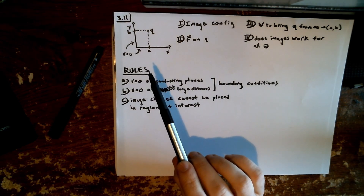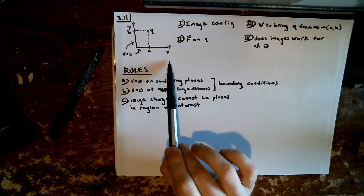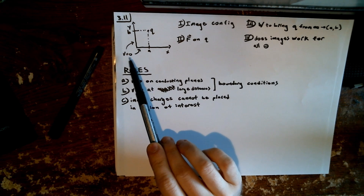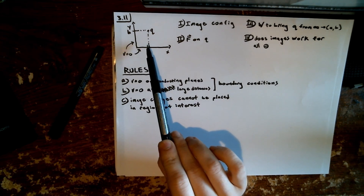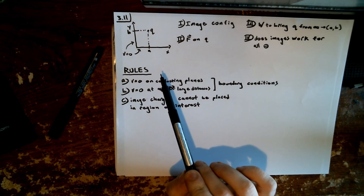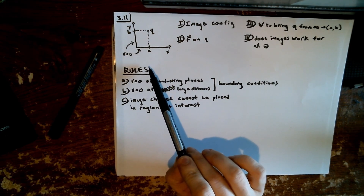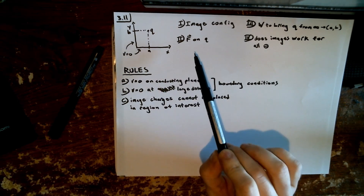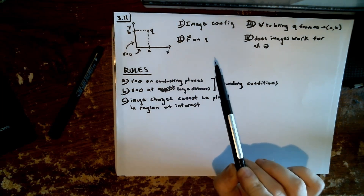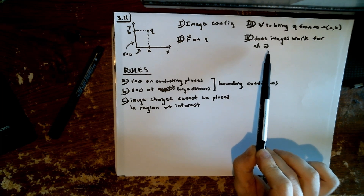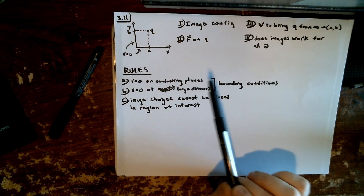The setup of the problem is that two semi-infinite grounded conducting planes meet at right angles. They terminate at the origin. These planes lie on the XZ plane and the YZ plane, and they all have a potential of zero. There is a charge Q situated a distance B from the X axis and A from the Y axis. This problem essentially asks four different questions: What is the image configuration — where do we place our image charges and what are their values? What is the force on Q? How much work does it take to bring Q from infinity to where it is currently situated at AB? And does the method of images work for all angles of theta — here we have theta of 90 degrees, but does it work for arbitrary theta?